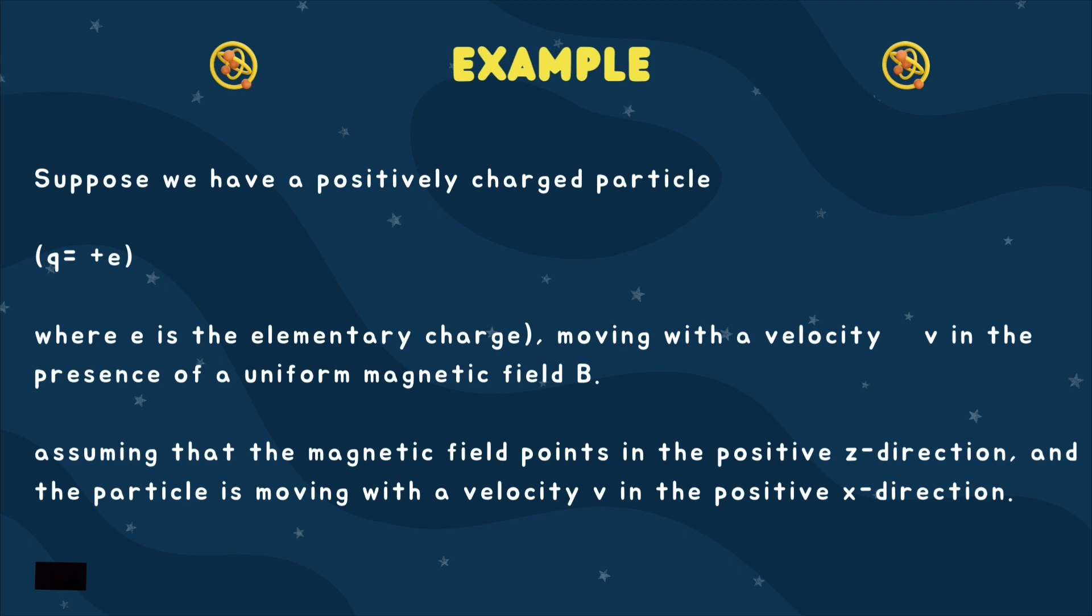Now, according to the Lorentz force equation, F equals Q Vec V times Vec B, we can calculate the force experienced by the particle due to the magnetic field. Since the velocity and magnetic field are perpendicular to each other, the force experienced will be perpendicular to both Vec V and Vec B, resulting in a force acting in the Y direction.